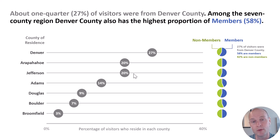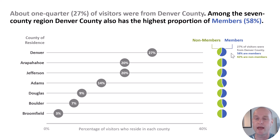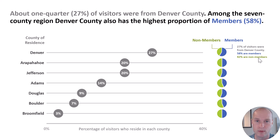I wanted to also show the percentage of zoo members and non-members within each of those counties, so I used these little pie charts. 27% of our audience was from Denver County, and then 58% of those Denver County residents were members while 42% were non-members. I annotated that with text boxes so you can clearly see: 27% from Denver, 58% members, 42% non-members.